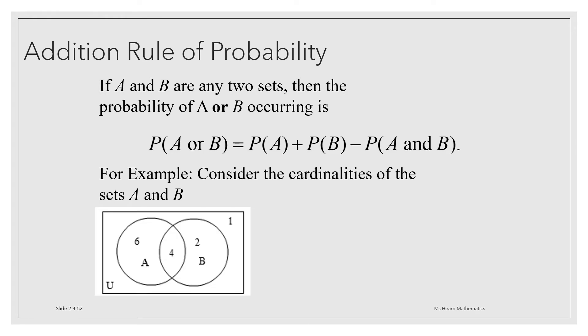We can actually use that same example and just imagine that we're drawing names out of a hat. There are 10 names that are from family A and 6 names from family B and 4 names are in both because people got married.